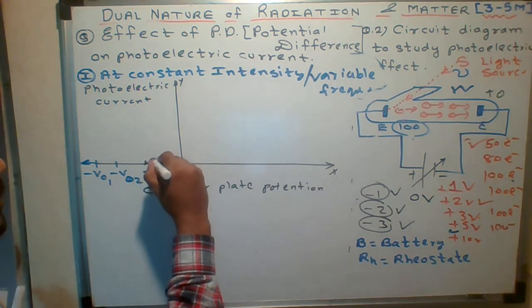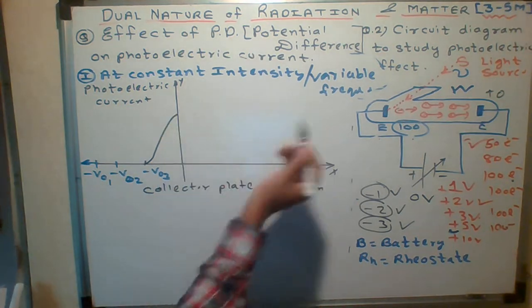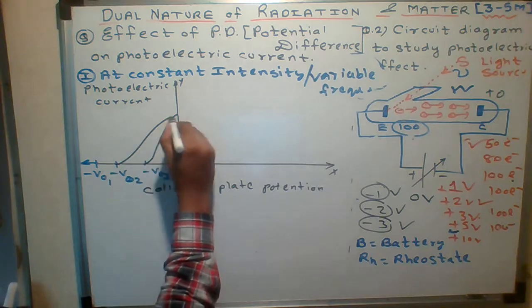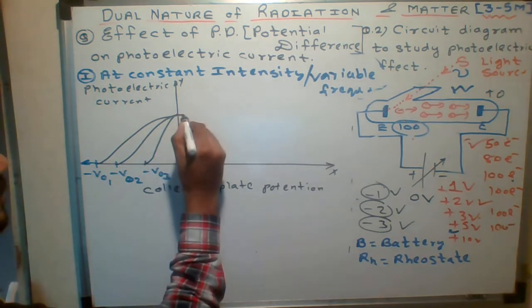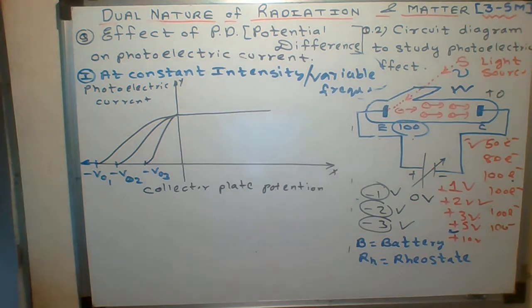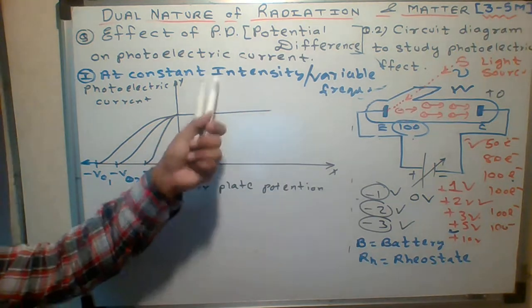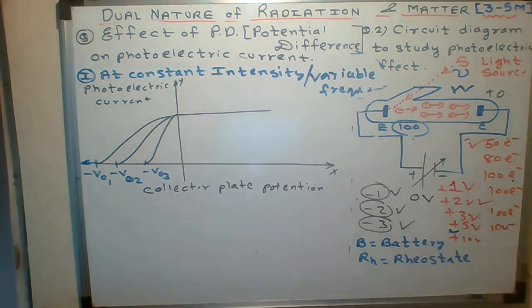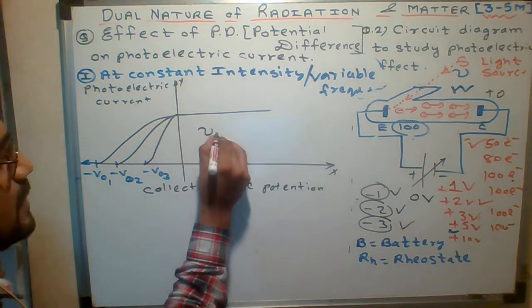...will be like this. This particular graph will be like this. It remains constant after this point. So this is the graph for variable frequency but constant intensity. As frequency increases...